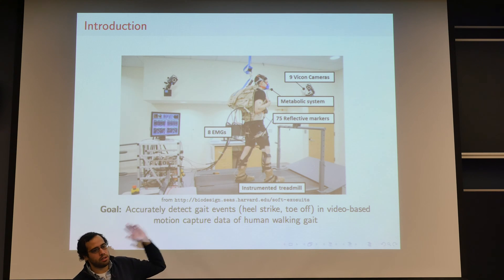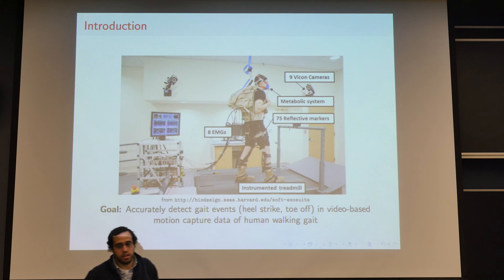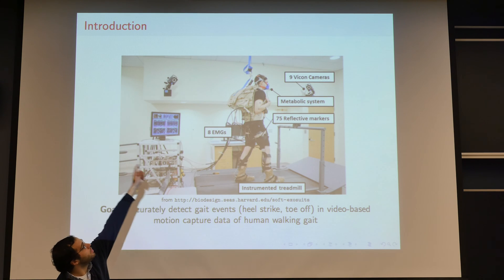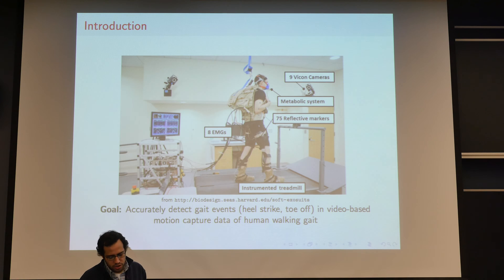People are either walking on a treadmill or over ground. They are wearing reflective markers that you can barely see. They're very small, placed all over their body, which are tracked through a camera system. So you get 3D position information of all the markers placed on the subject, and sometimes you have some additional hardware to measure other variables such as EMG and metabolic cost.